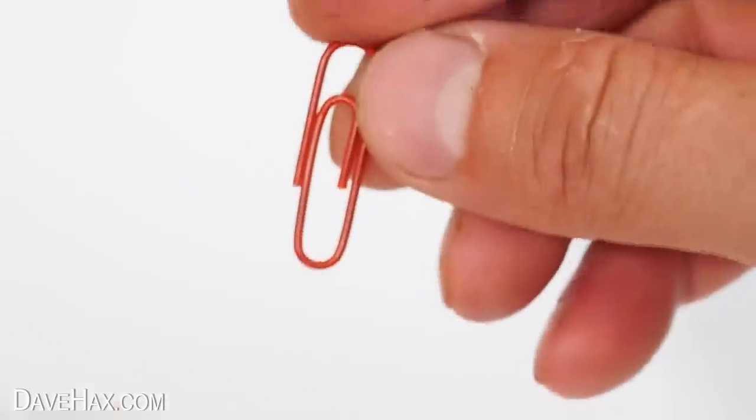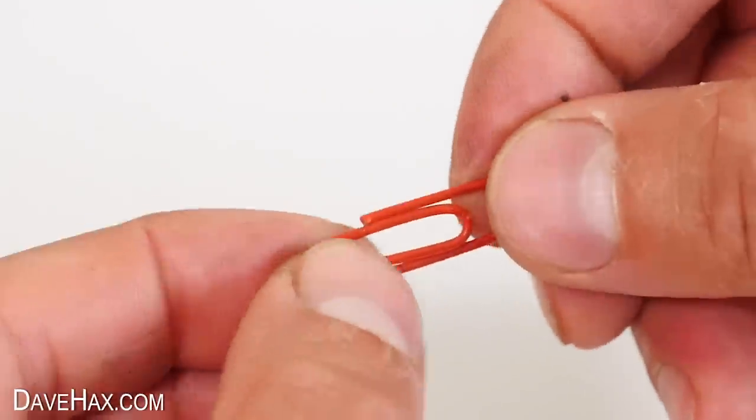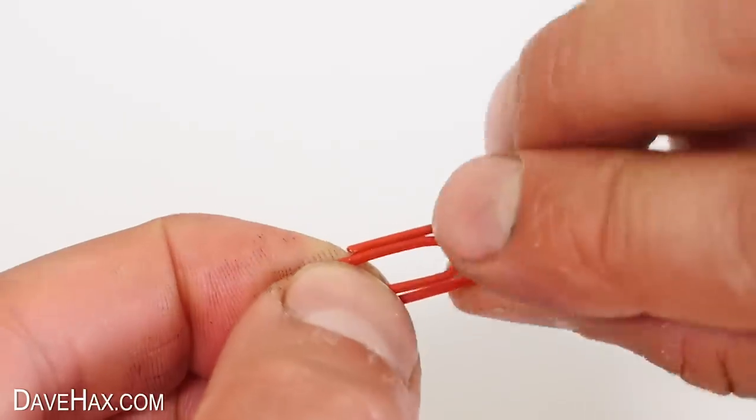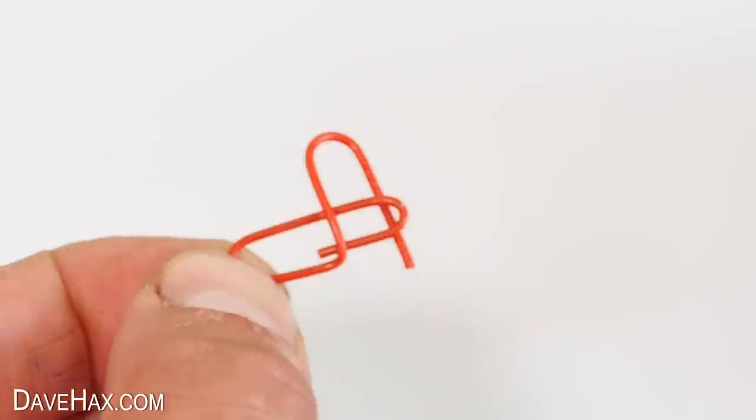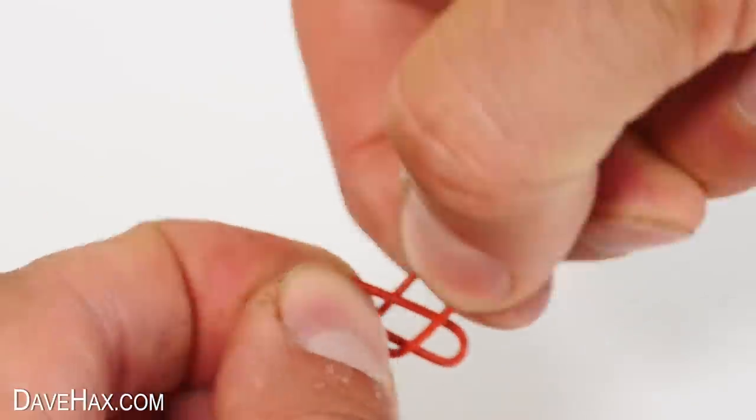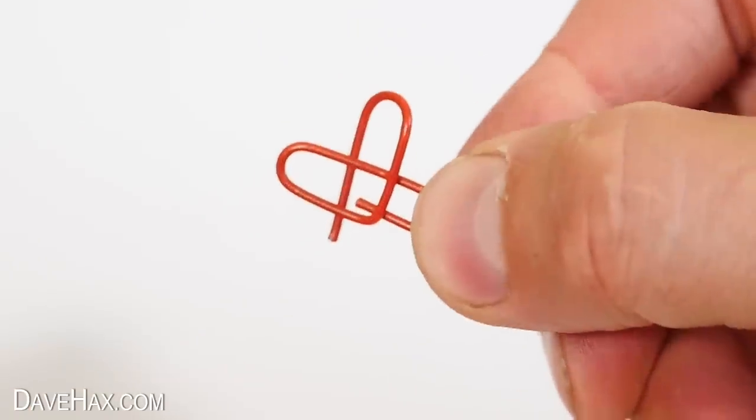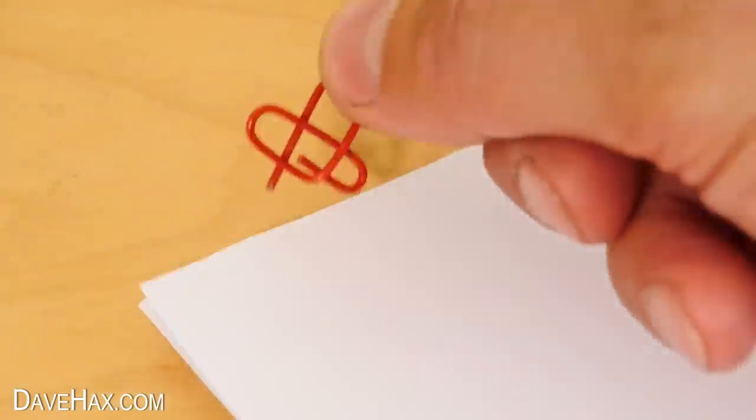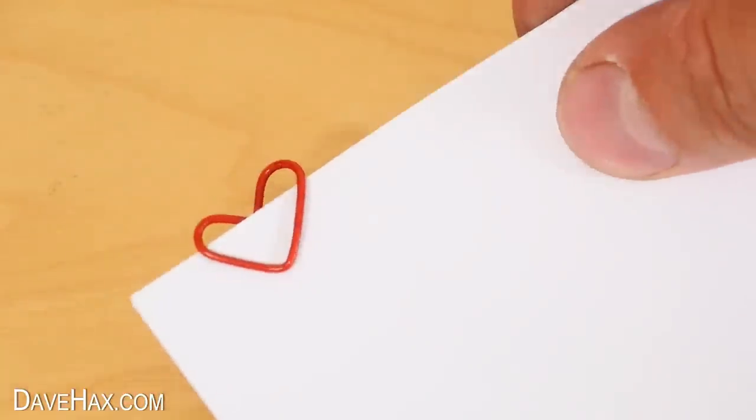You can use a red paper clip to leave a special message for a loved one. Hold the paper clip like this and bend it around like this. Make sure this part is at the back. Then twist it over to this side, and it should look like this. Hook it over the top of a loved one's papers to leave them a romantic love heart.